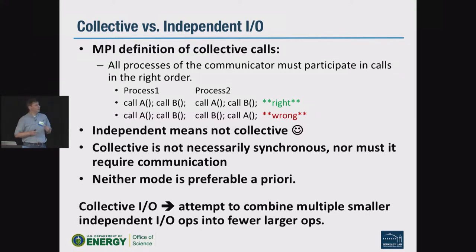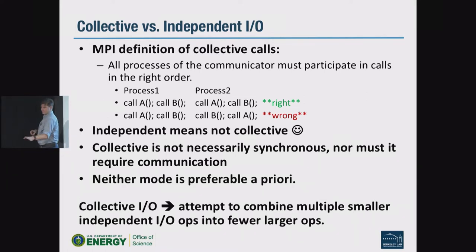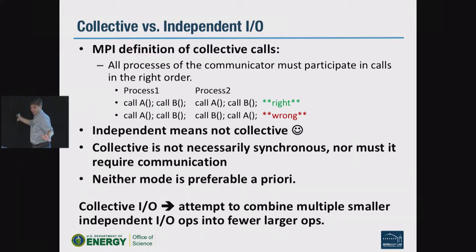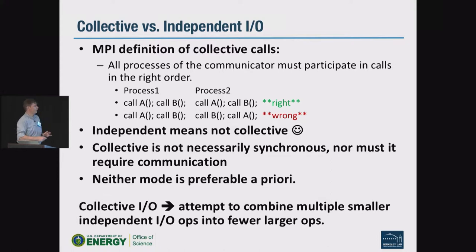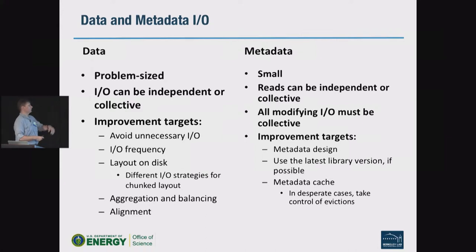There's a call in HDF5 called H5Pset_alignment that helps you align the IO you want to write with the underlying block size in the file system. For example: for everything over 500 bytes, align at a one-megabyte boundary. That way you can be certain your chunks and contiguous datasets are lined up with the Lustre striping happening underneath. So just be cautious — HDF5 is doing some advanced stuff underneath, and you want to make sure things line up properly.